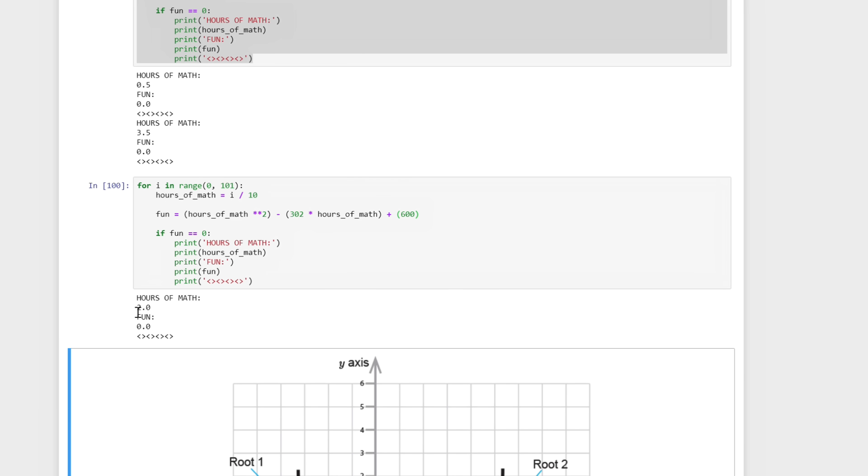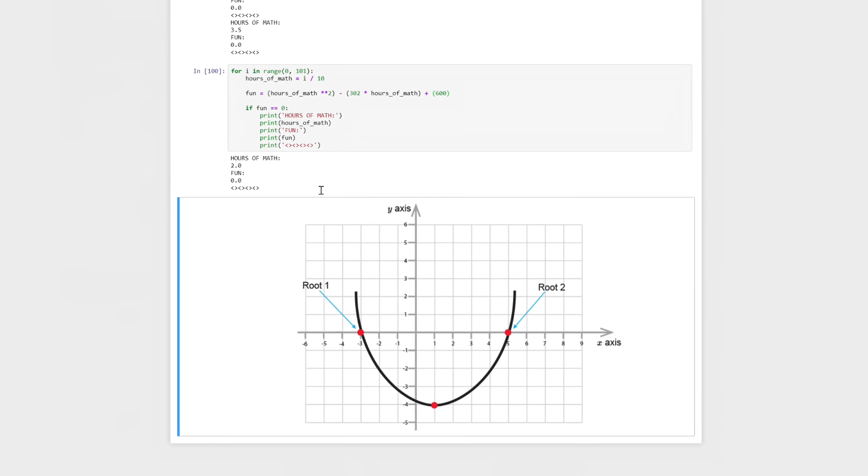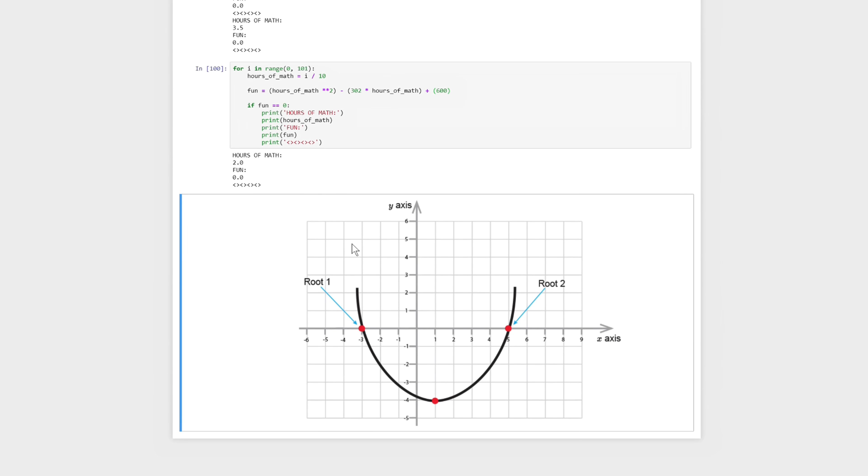So there's a couple of things to take note of here. First of all, there doesn't necessarily have to be two roots to a quadratic equation. There can be one root if the root is at the very bottom. So if you imagine this guy, if we moved it up all the way to 1, there would only be one root, and it would hit the x-axis at one point. Or there could be no roots if it's above the x-axis.